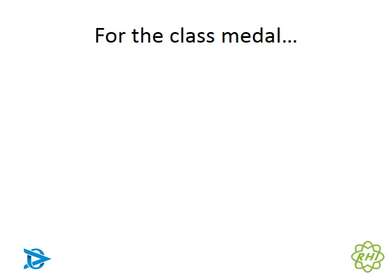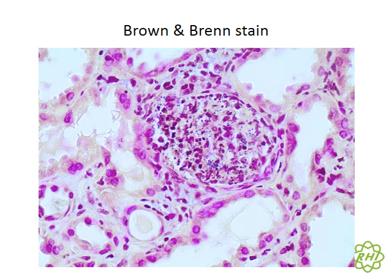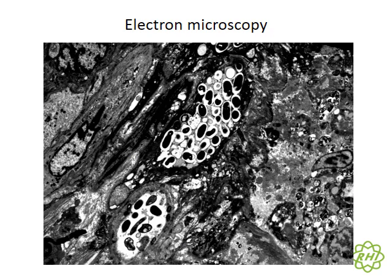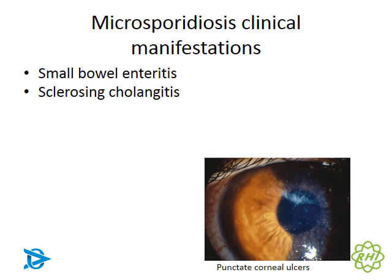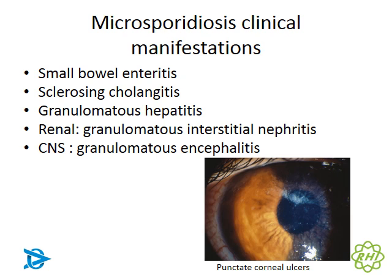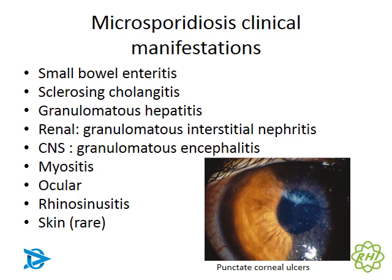Some tricky histology slides from Dr. Stead: a Brown and Brenn stain showing tubular cells, and electron microscopy of the same tubular epithelial cell — this is Microsporidia diagnosed in a patient. Microsporidiosis can be found in a wide range of organs: small bowel enteritis is the form routinely picked up on MCNS. It can also track up the bile tract, infiltrate the liver, affect the kidneys, central nervous system, muscles, and more commonly cause ocular lesions. These manifestations occur in patients with very low CD4 counts.